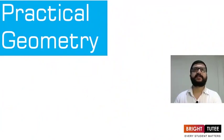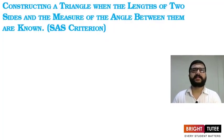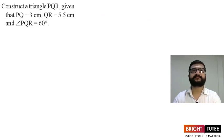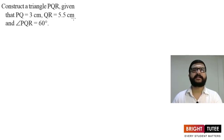In the previous session we learned how to construct a triangle when all three sides are given. Now in this session we are going to see how to construct a triangle when the length of two sides and the measure of the angle between them is given. This is the SAS criteria. The question here is: construct a triangle PQR given that PQ is 3 centimeters, QR is 5.5 centimeters, and angle PQR is 60 degrees.